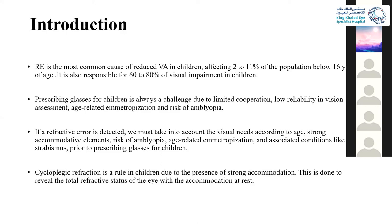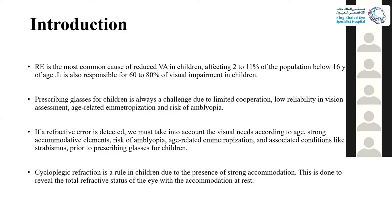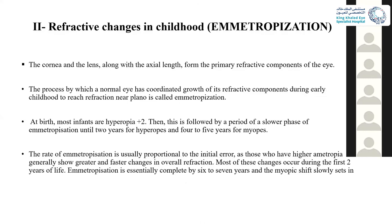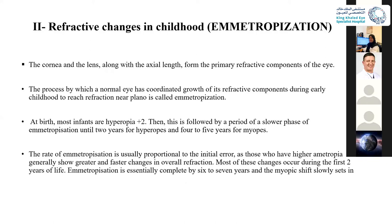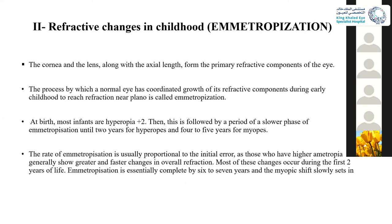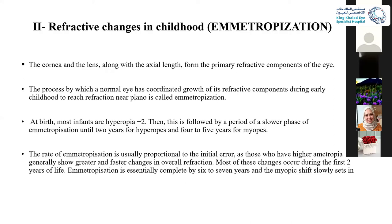Cycloplegic refraction is the most important and this is the rule in children due to reasons of strong accommodation. We will speak first about the refractive change in children — emetropization. The cornea and the lens, as well as the axial length, form the primary refractive components of the eye. The process by which the eye coordinates the growth of its refractive components during early childhood to reach a refraction near plano is called emetropization.